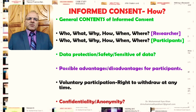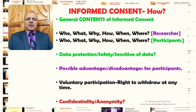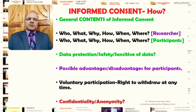The informed consent should also briefly respond to what advantages or possible disadvantages participants might have as a result of their participation in the research process. The informed consent must also describe that participation is voluntary — there is no force or compulsion — and participants always have the right to withdraw at any time or at any stage. Additionally, the informed consent has sections that assure respondents the confidentiality of their data and, in some cases, anonymity, so that participants' personal data will not be shared with third parties.